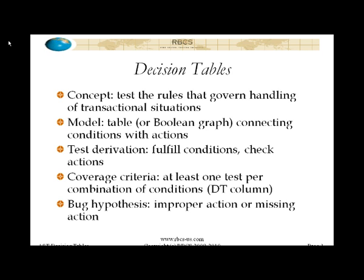An example of this would be an ATM, or automated teller machine. Each customer's interaction with the ATM is insulated from the next customer's. Similarly, printing monthly checking account and savings account statements for bank customers is another transactional situation. The particular conditions that apply to a particular customer and their accounts determine how their statement will be printed and delivered to them, but that will not influence the subsequently printed and delivered statements for other customers. They're transactional — insulated one from the other.